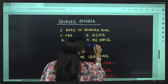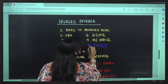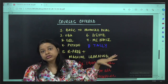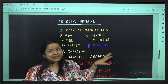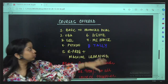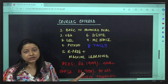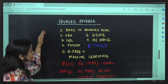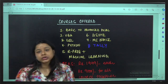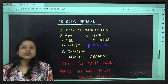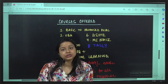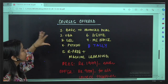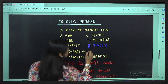The last course we have is Tally, which is mostly for accounting students and is a go-to tool for those pursuing CA, CS, and CMA. So these are the 8 different courses we have. Each course costs 2000 rupees individually, or you can take all courses together for 9000 rupees. You can complete each course in about 10 days — Excel in 10 days, VBA in 10 days, SQL similarly.